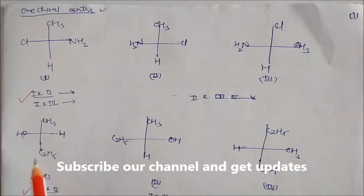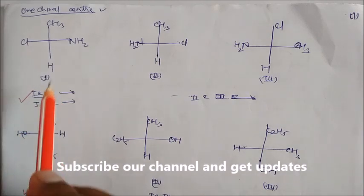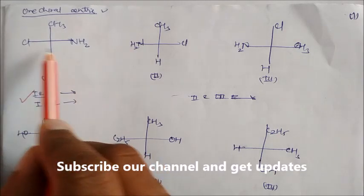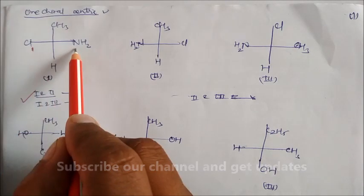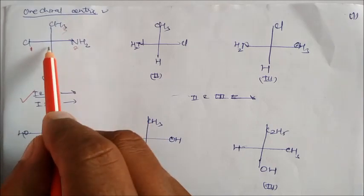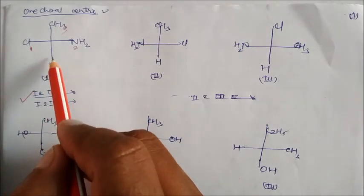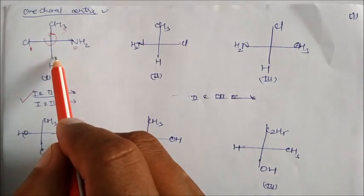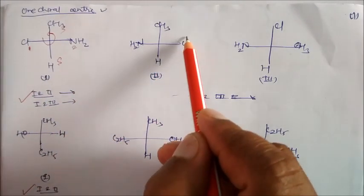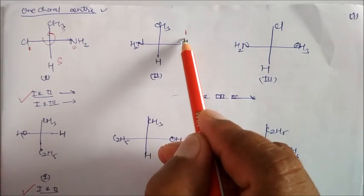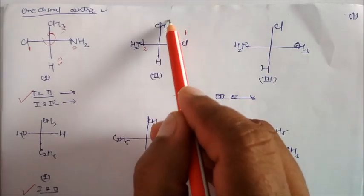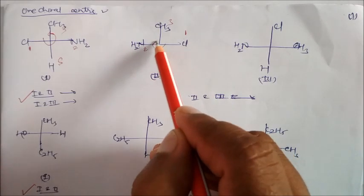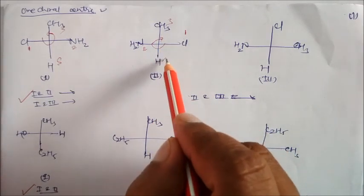Now, how can we calculate the R and S nomenclature? As per the atomic number, this is your 1, this will be your 2, and this will be your 3. If you see hydrogen in the vertical line, this is anticlockwise, so this will be your S. Here again, Cl is on this side — Cl is the highest atomic number, followed by nitrogen and then carbon — with hydrogen again in the vertical orange line. So we calculate like this: this becomes your R.